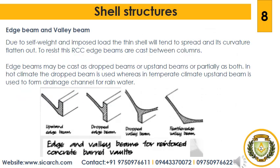Due to self-weight and imposed load, the thin shell will tend to spread and its curvature flatten out. To resist this, RCC H-beams are cast between columns. H-beams may be cast as dropped beams, upstand beams, or partially as both. In hot climates, the dropped beam is used, whereas in temperate climates, an upstand beam is used to form a drainage channel for rainwater. In multi-bay structures, spreading of the vaults is largely transmitted to adjacent shells, so a stand and feather valley beam is used.